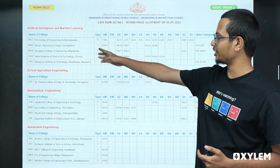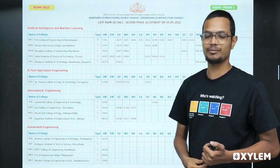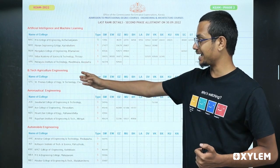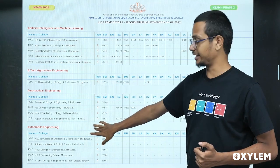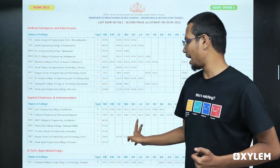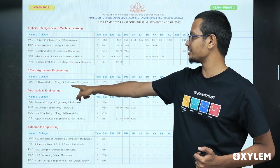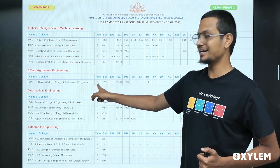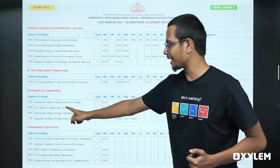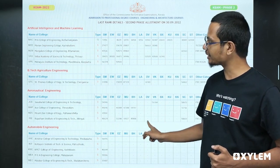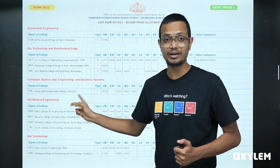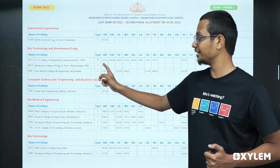AI and Machine Learning — B-Tech and Agricultural Engineering are available here. B-Tech and Agricultural Engineering is a self-financing college option. Also, Aeronautical and Automobile Engineering, Biotechnology and Biochemical Engineering are listed. Similarly, Computer Science Engineering and Business Systems are also available.